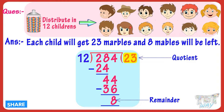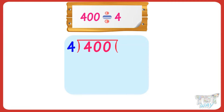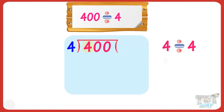Now, let's learn more on division. We have to divide 400 by 4. Here, the first digit in the dividend is equal to the divisor, which is 4.